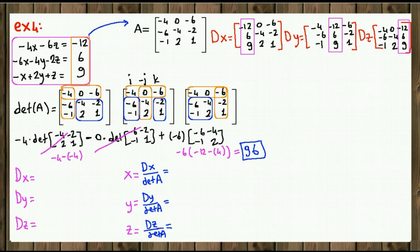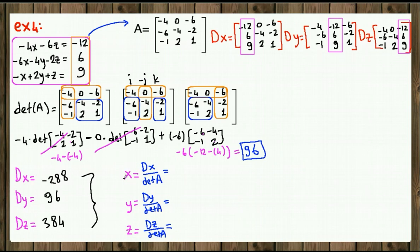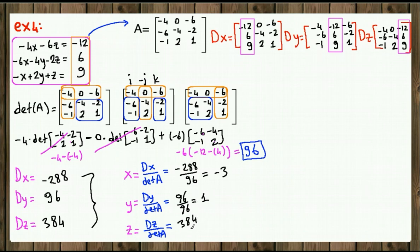Using any technique, we find the other determinants: DX is negative 288, DY is 96, and DZ is 384. Now applying the formula: x equals DX over determinant of A, which is negative 288 divided by 96, giving negative 3. Y equals 96 divided by 96, which is 1. Z equals 384 divided by 96, which is 4. So the unique solution is (negative 3, 1, 4).